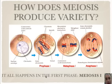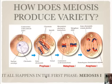These processes create variety. It all happens in the first phase, meiosis I — you have crossing over, the Law of Independent Assortment, and the Law of Segregation.